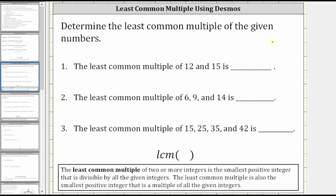For examples, we will find the least common multiple of 12 and 15, the least common multiple of 6, 9, and 14, and the least common multiple of 15, 25, 35, and 42.